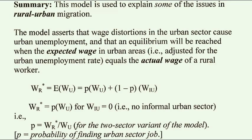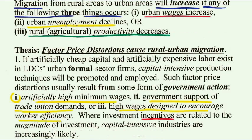Migration from rural to urban areas will increase if any of the following three phenomena occur. First, if the urban wage increases. Secondly, migration will increase if urban unemployment declines or if urban employment increases — if P increases, you'd expect more people to migrate to the urban area, since the probability of finding an urban job is higher.